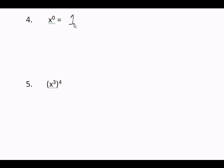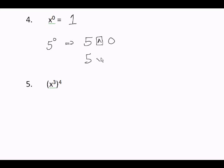Rule number 4: any base to the 0 power equals 1. X to the 0 power equals 1. Try it on your calculator — type in 5, then the exponent button, then 0. Some calculators use an arrow-up button or a y-x button. Either way, 5 raised to the 0 power gives you 1. Any base to the 0 power equals 1.